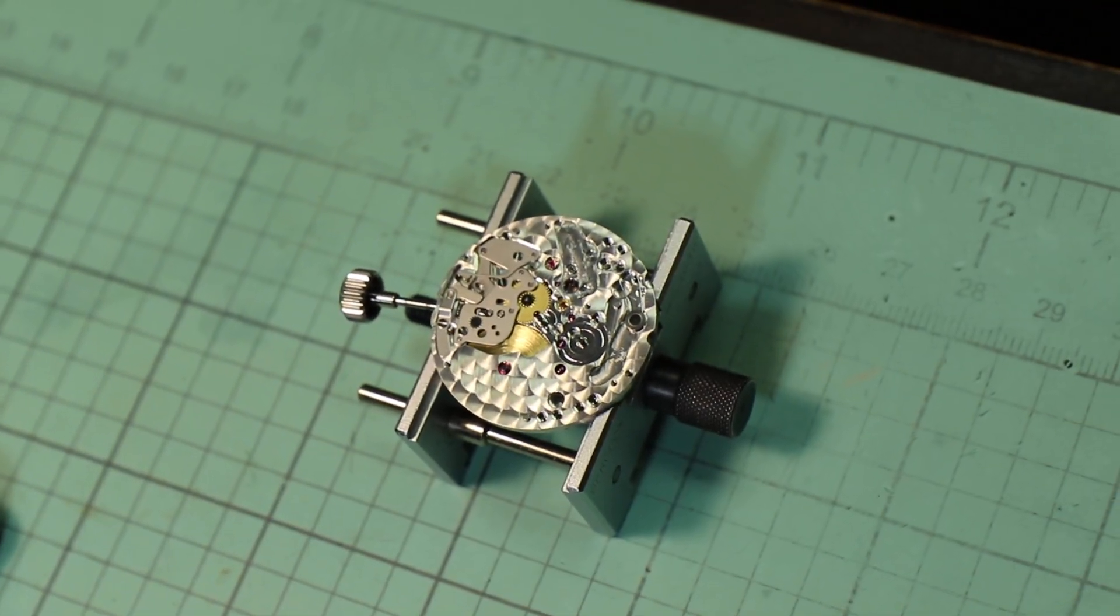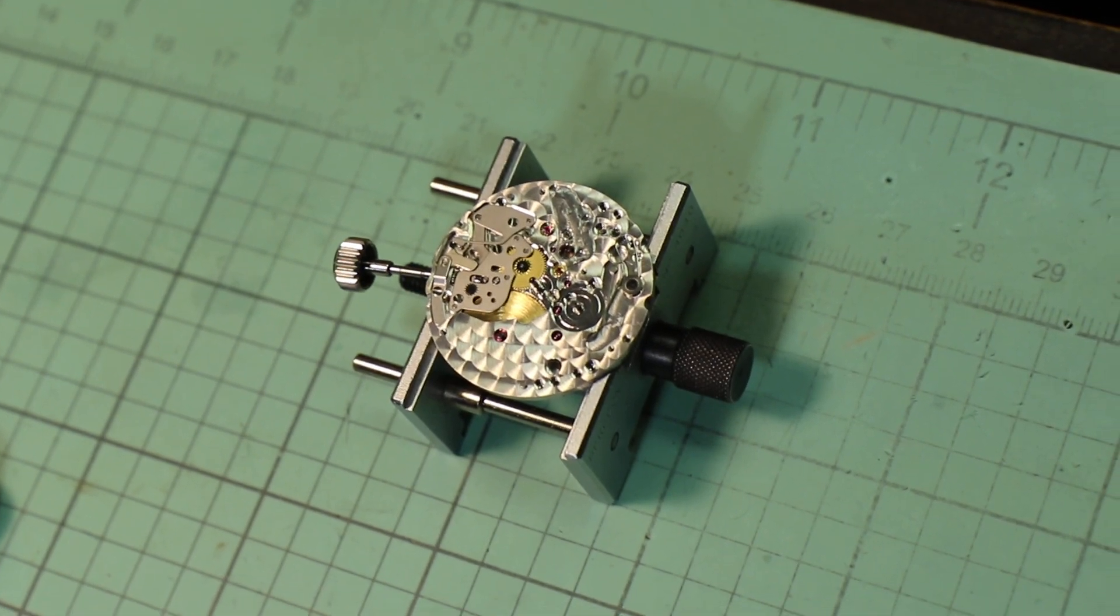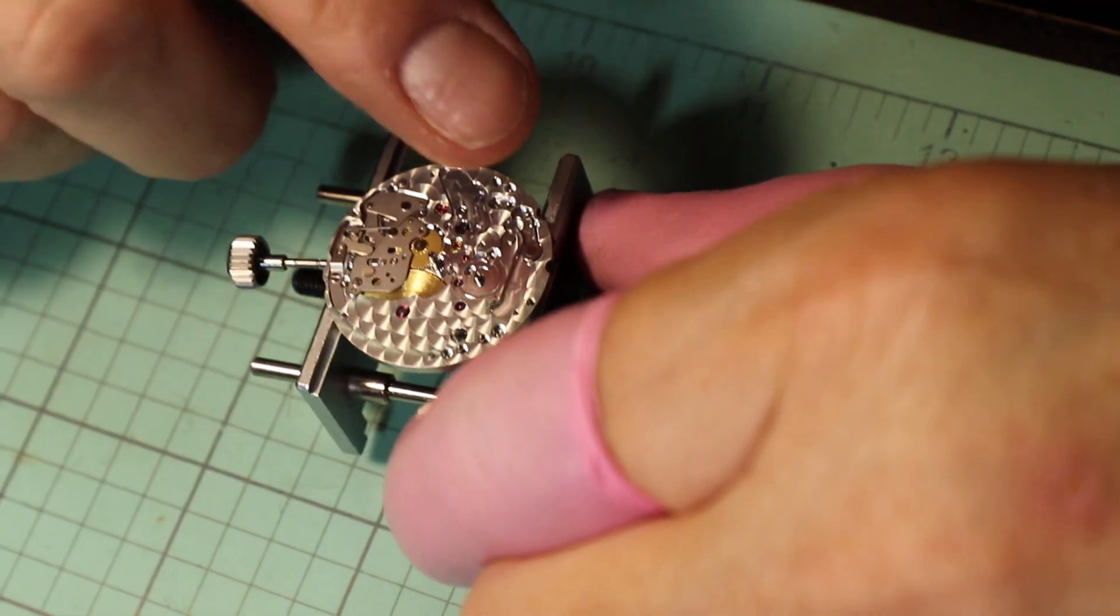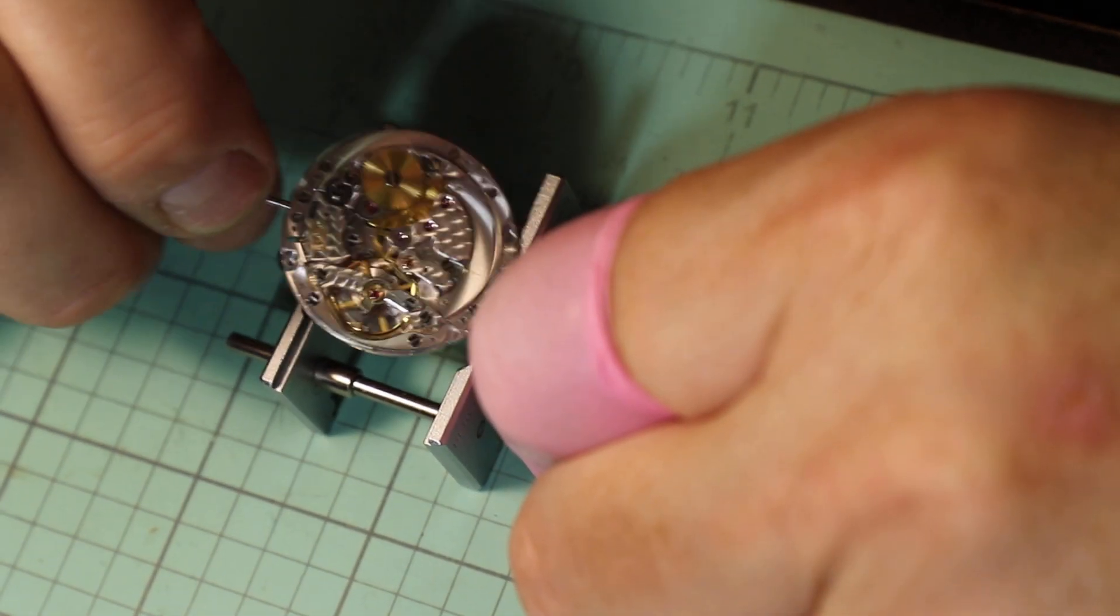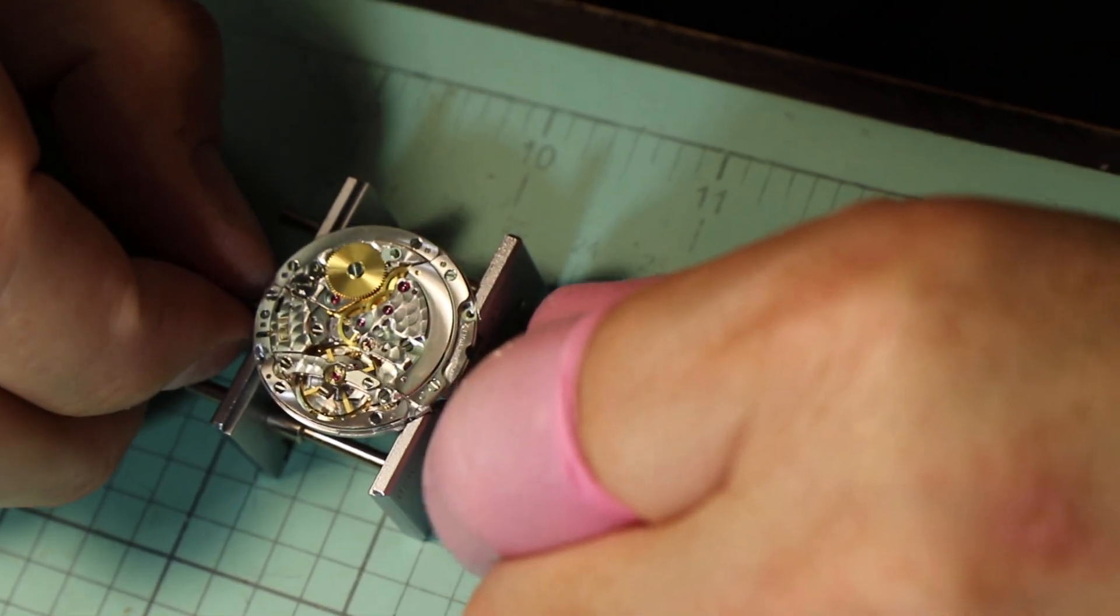Remember that the center was already oiled, the barrel was already oiled. So now we're going to flip the movement over and we're going to oil the train side.